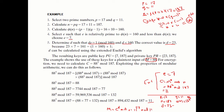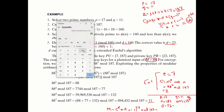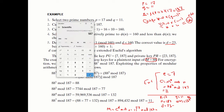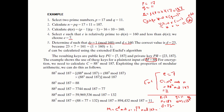So 11^23 mod 187 gives us 88, which is the original message. The value of D = 23 is confirmed accurate. The calculation is simple yet the algorithm is very complex.